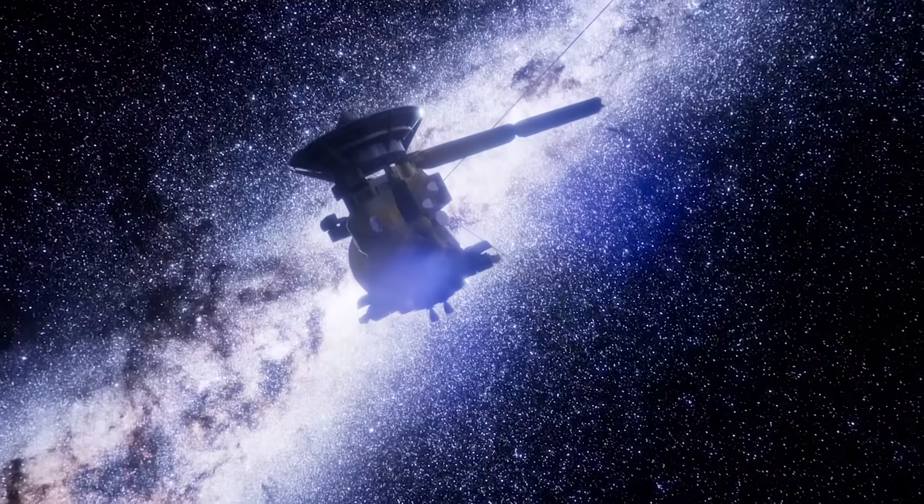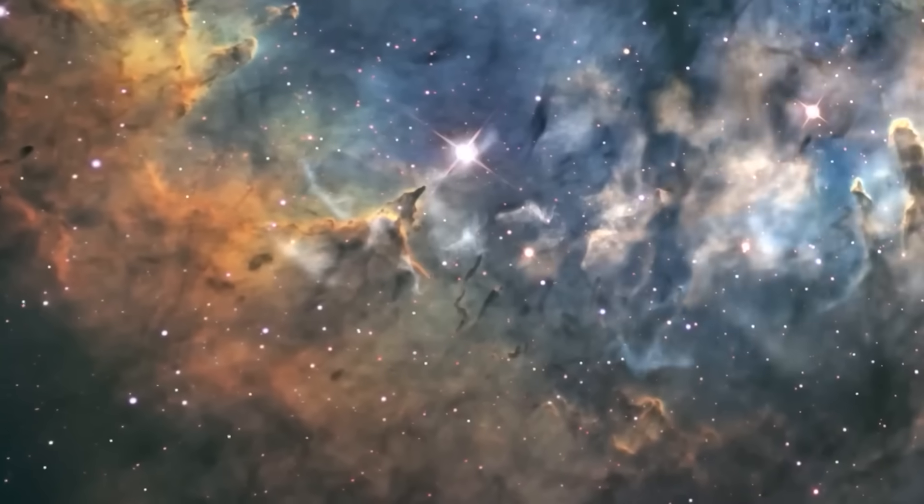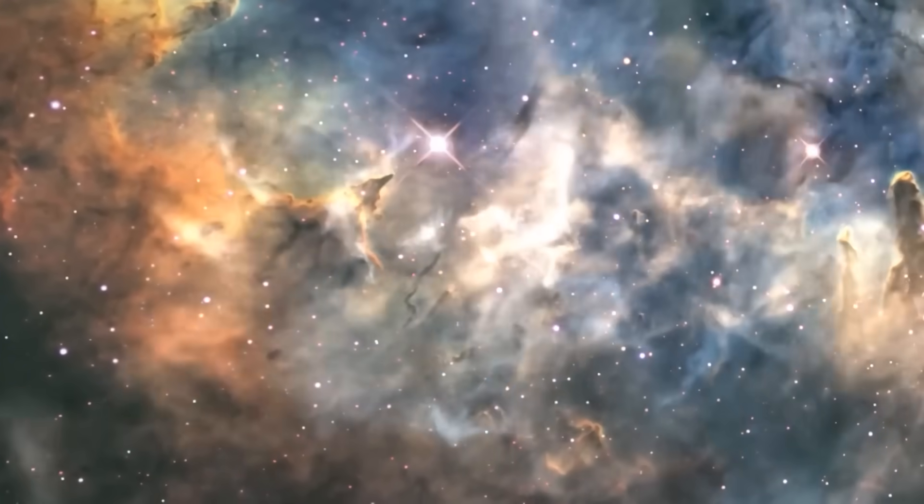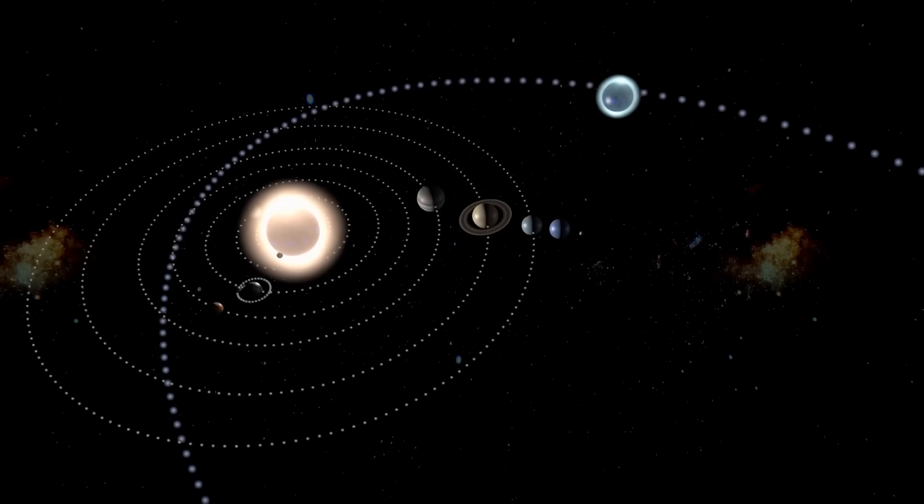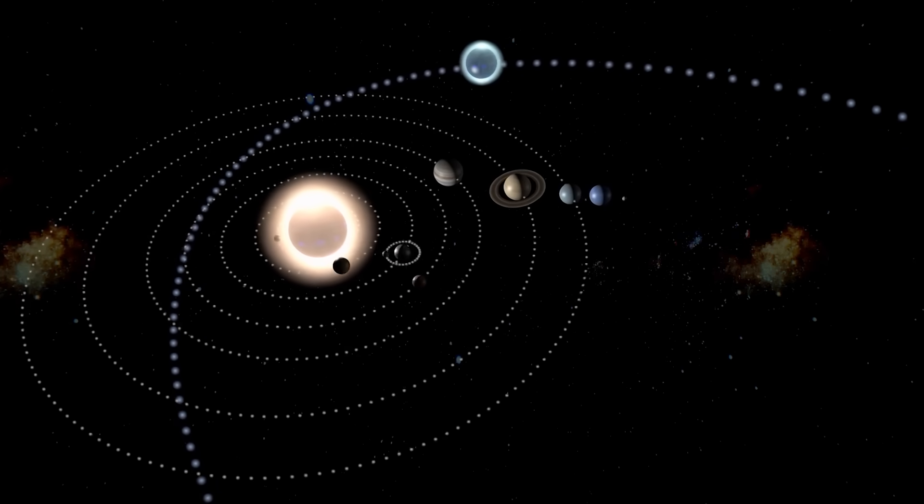The location of Voyager 1 at the time of the encounter added another layer of intrigue. It was drifting near a boundary zone thought to be a relatively empty stretch of interstellar medium, free of stars or debris. Nothing in previous maps indicated the presence of any structure or planetary system.